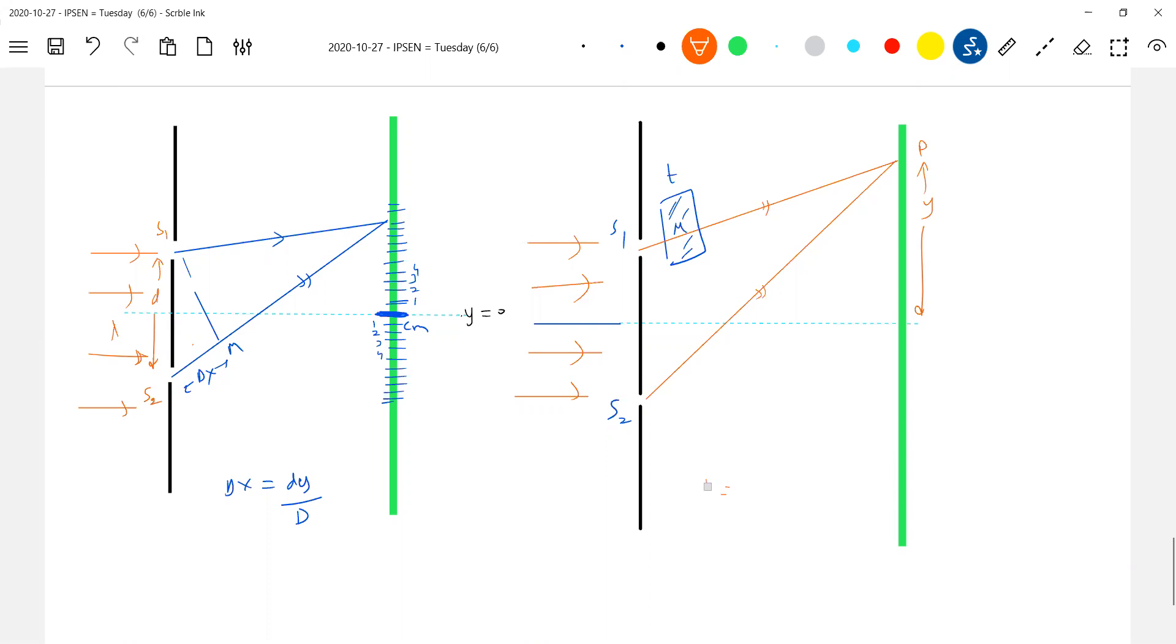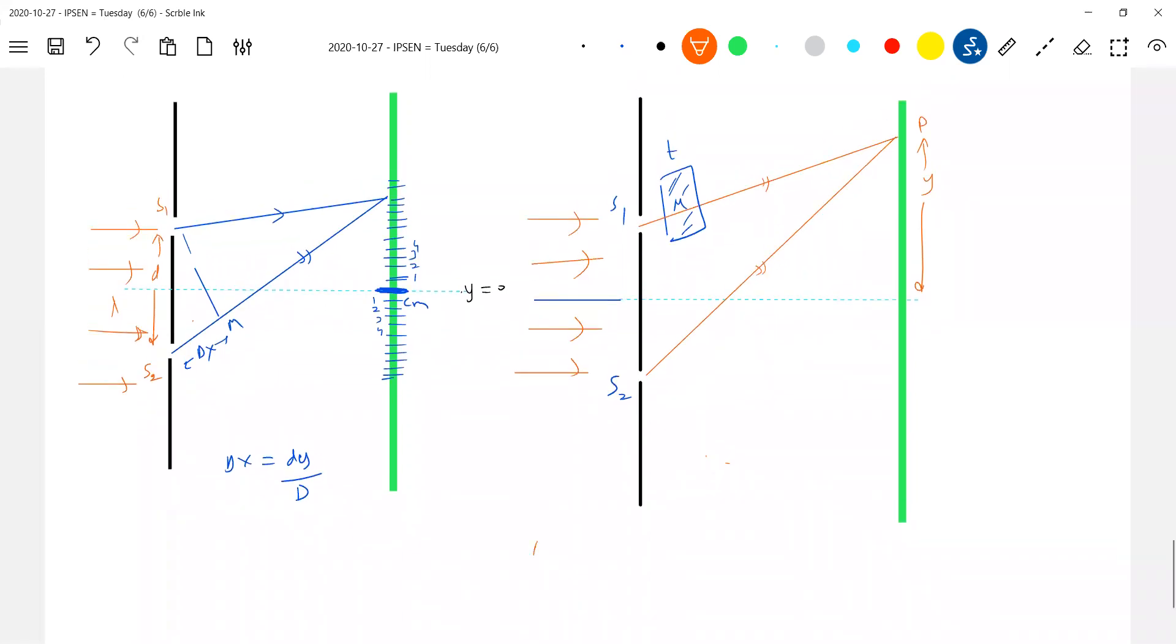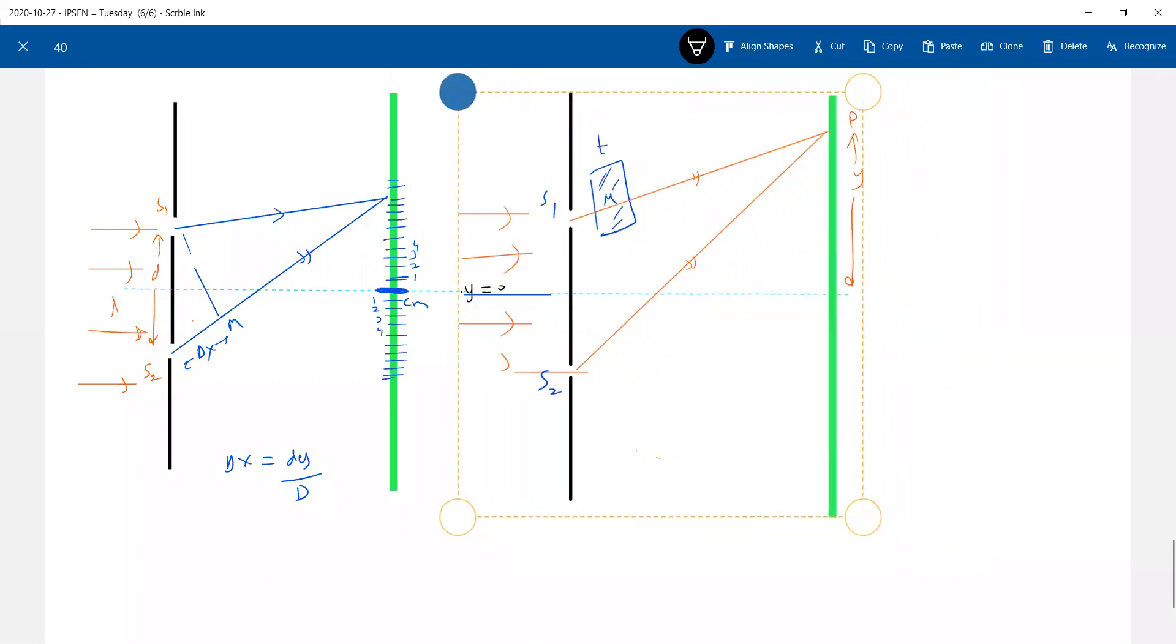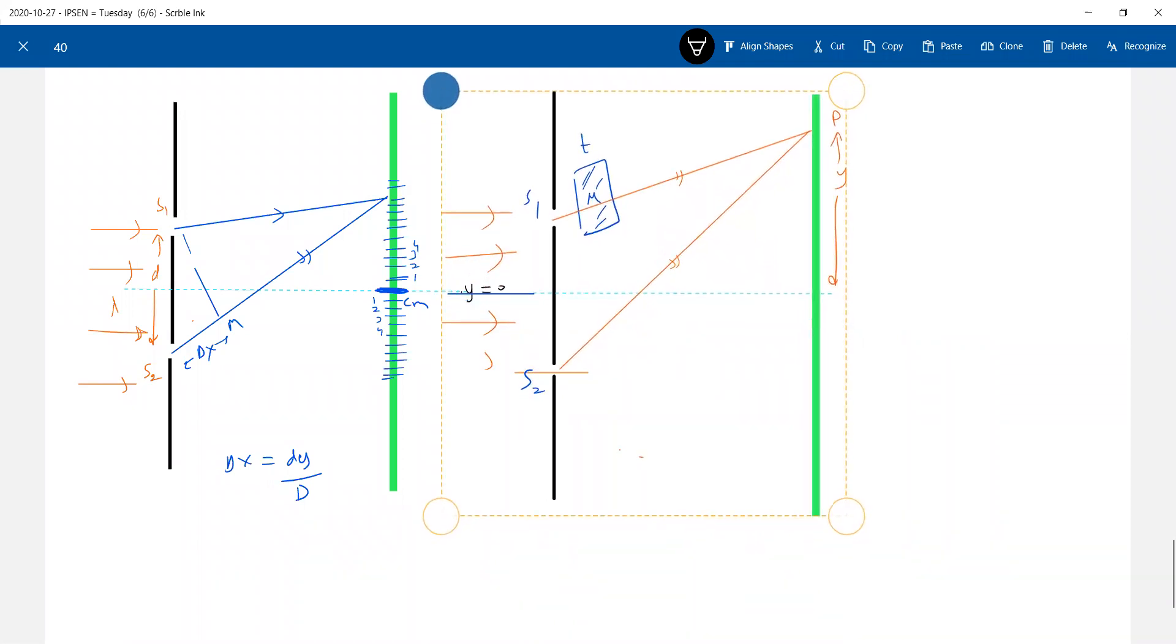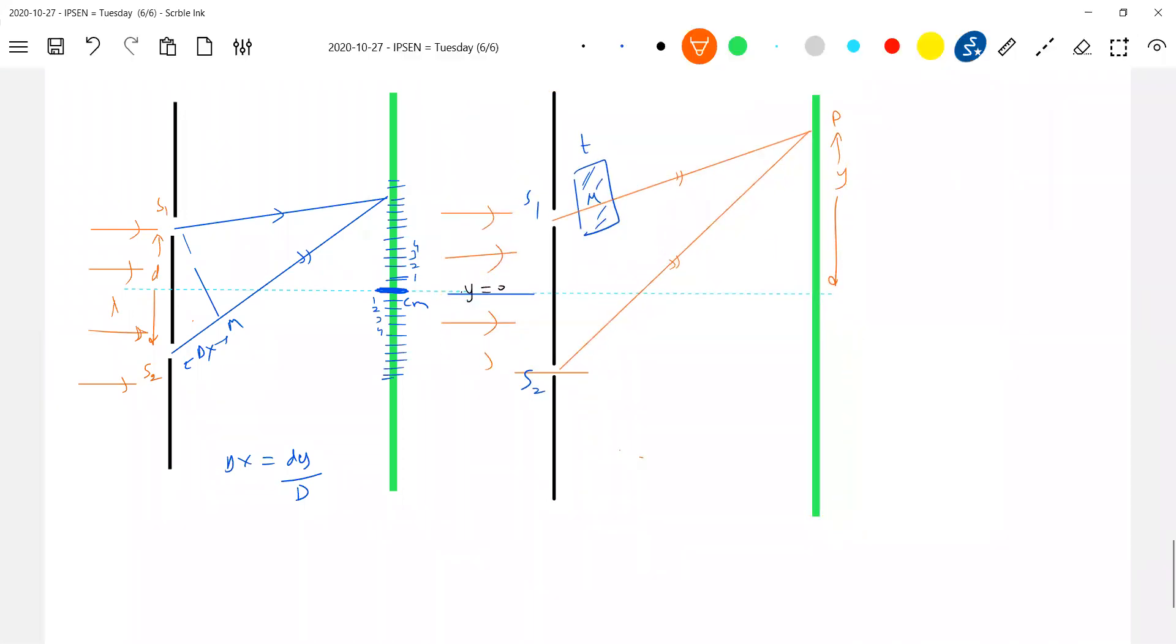Delta x dash. I need some space here. Delta x dash is equal to S2P minus S1P dash. You write it, so S2P, this will be in the bracket, S1P minus T plus mu T.